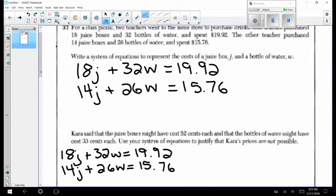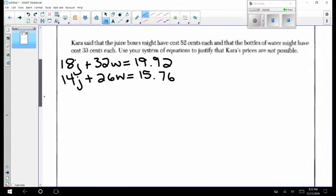Now that we have our system of equations let's solve it to show that Kara's prices are not possible. We will use the elimination method to solve this system so let's decide to eliminate the J variable. To do that we'll multiply our equations by each other meaning we'll multiply the 18 by 14 and the 14 by a negative 18 so that we can get the J variable to eliminate.